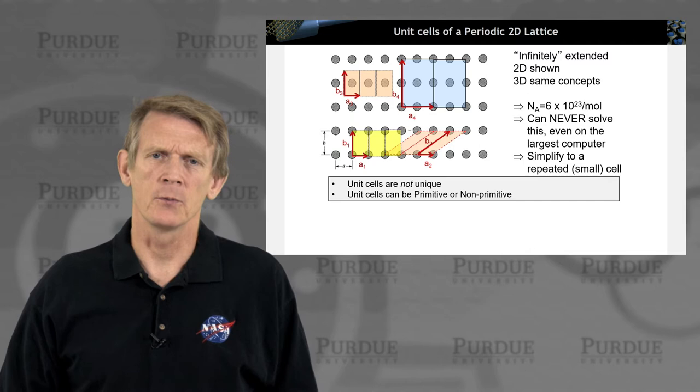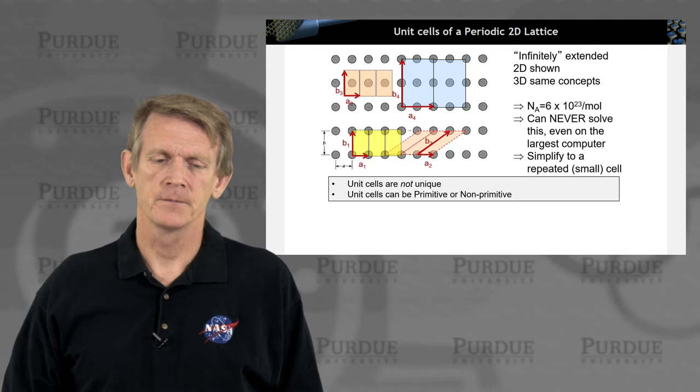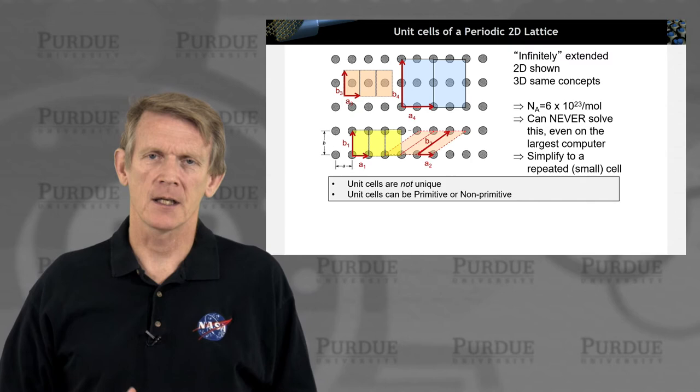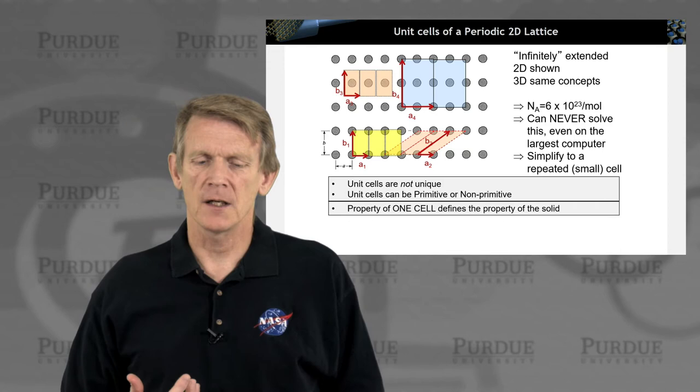They also could have more atoms in it. So here's an example of a unit cell that has more atoms in it here in blue. The other ones, the red and the yellow here, are primitive in that they have a single atom per unit cell. The blue one here has more atoms, and that's a non-primitive cell. But again, you can have a non-primitive cell and define it that way and reach every atom in the crystal like that.